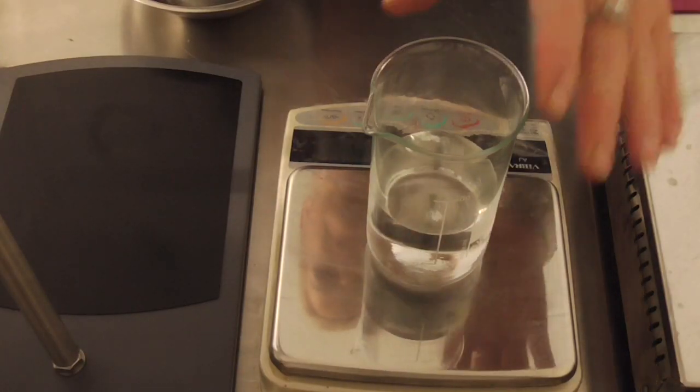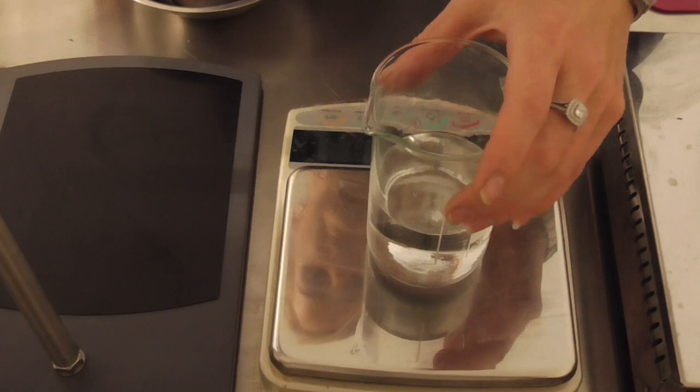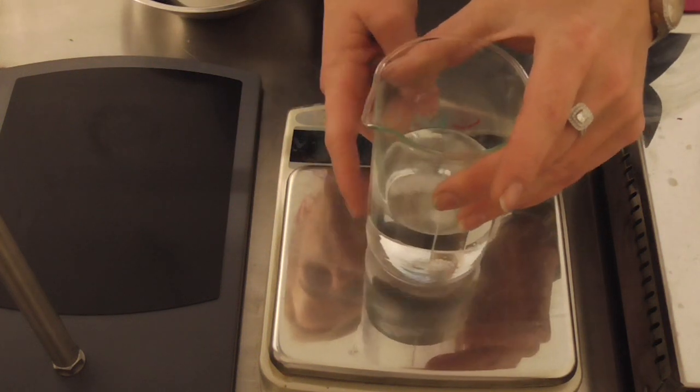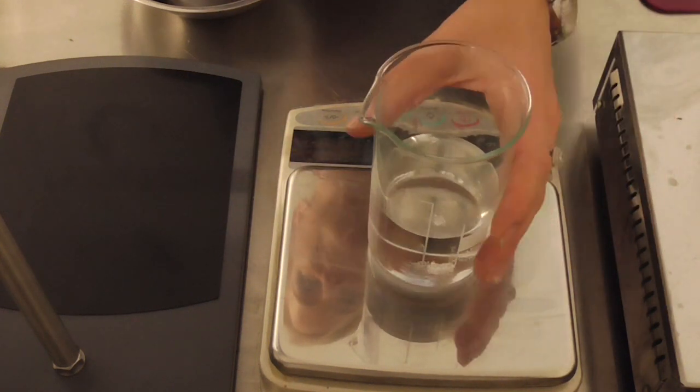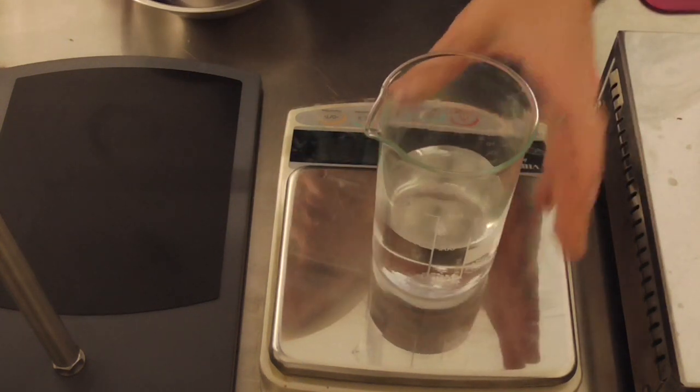The first one I'm going to show you is the polysorbate based micellar water. So what I have in here is water, some glycerin and my preservative. Now when you're creating these formulas make sure you've got a good water soluble preservative in there.